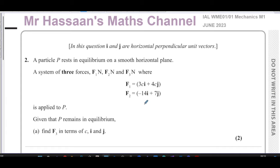It says a particle P rests in equilibrium on a smooth horizontal plane. A system of three forces, F1, F2, and F3, where F1 equals 3ci plus 4cj. So I'm going to rewrite F1 and F2 in a different color.